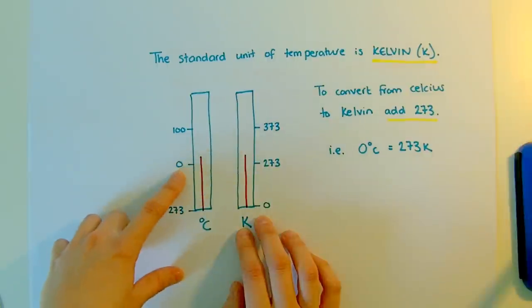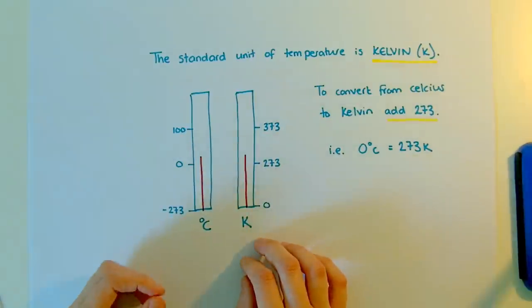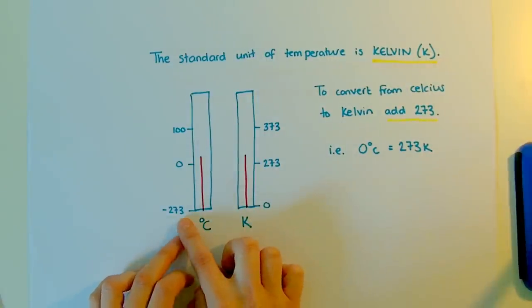The Celsius scale came about when zero was described as the freezing point of water. So we just need to trace back from there to find out what absolute zero would be in Celsius. In actual fact, it's minus 273.